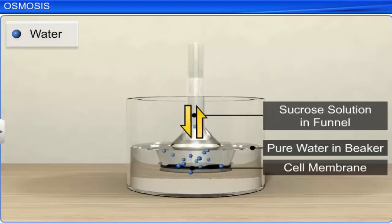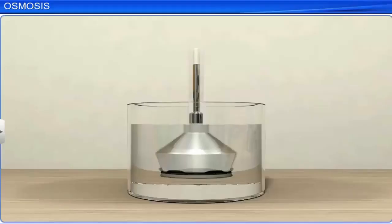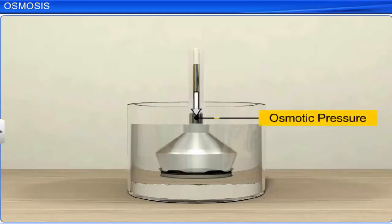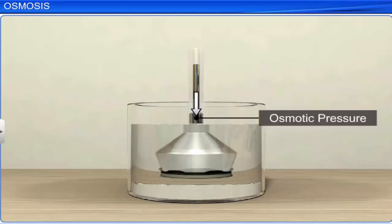This water movement will continue till both solutions in the funnel and beaker achieve equilibrium. We can apply external pressure to the upper part of the funnel so that no water diffuses from beaker to funnel through the membrane. This external pressure required to prevent the water from diffusing is known as osmotic pressure. Osmotic pressure is a function of solute concentration — the higher the solute concentration, the more is the diffusion of water, and therefore more osmotic pressure will be required to stop the entry of water molecules into the solution.